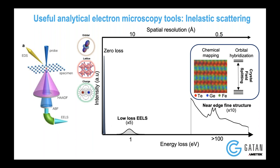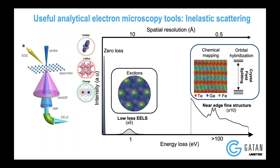Towards the end of my talk, I'll be moving towards low-loss EELS where I'll be talking about these bosonic states called excitons. This is a very recent work of ours where we could actually see where the excitons are located in a moiré pattern of 2D materials.